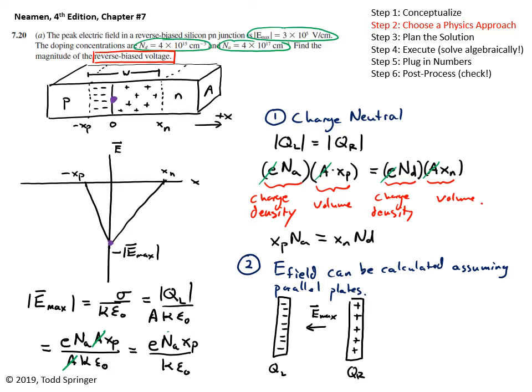But I can write that in another way because I know that N A xp is equal to N D times xN, according to this equation. So all in all I get E max can be written in two ways, either E N A xp over kappa epsilon naught, or I can write it E N D xN over kappa epsilon naught. But either one is okay. Those relationships will be useful for us when we're solving this problem.